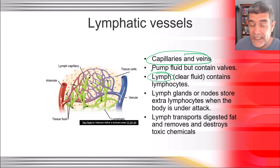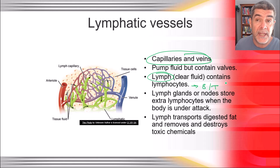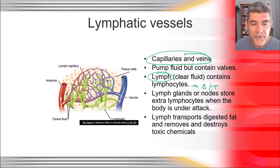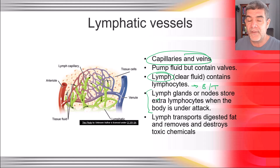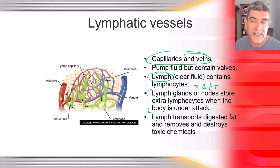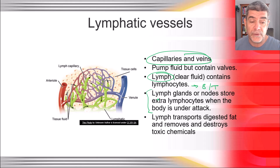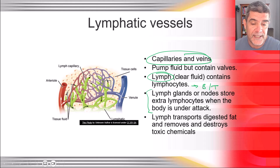Lymph is a clear fluid that contains lymphocytes, and there are two important types: B cells and T cells, which are very important in our immune system — something we'll look at in more detail in the HSC course. The lymph nodes store extra lymphocytes when the body is under attack, which is why your doctor will often feel for swollen glands. The lymph also transports digested fat and removes and destroys some toxic chemicals from the body, making it a really good cleaning system as well as being involved in fighting infectious disease.